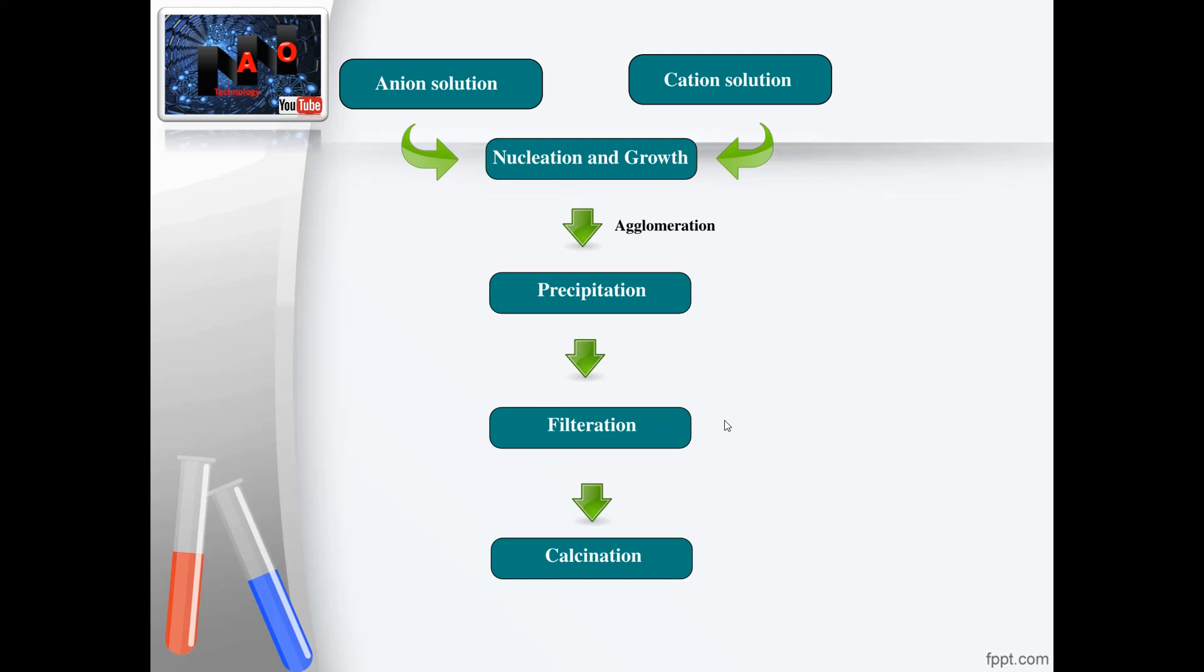After agglomeration, we have three more steps: precipitation, filtration, and calcination. Finally, the nanoparticles will be obtained.